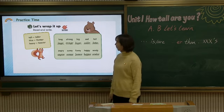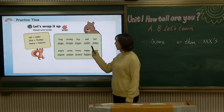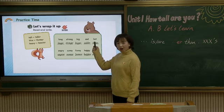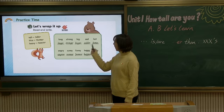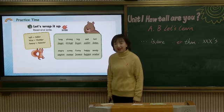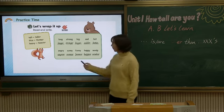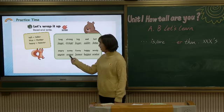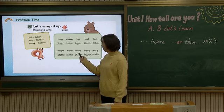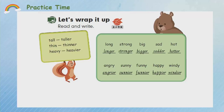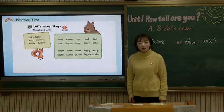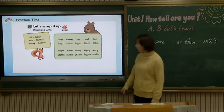Big — bigger. Sad — sadder. Hot — hotter. 在这里，Big, Sad, Hot 是双写末尾的辅音加-er。我们来看第二排吧：Angry — angrier. Sunny — sunnier. Funny — funnier. Happy — happier. Windy — windier. 嗯，这一排全是辅音字母加-Y结尾，所以把Y改I加-er。你们都写对了吗？相信你们一定都能正确地写完，因为这对你们来说并不难，对吗？